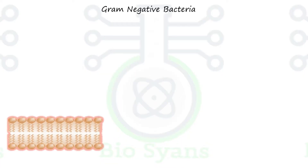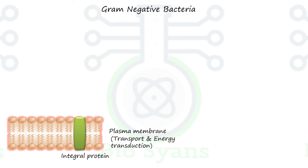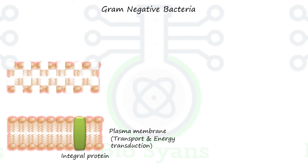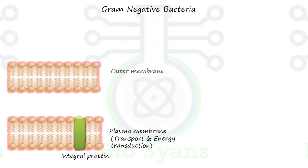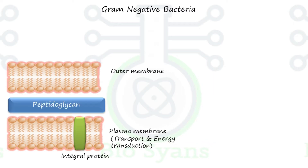Gram-negative bacteria have a plasma membrane that helps in transport and energy transaction. In addition to that, there is an outer membrane present, and in between there is a thin layer of peptidoglycan. Make sure you watch our video on peptidoglycan and band synthesis. The space between the plasma membrane and the outer membrane is called the periplasmic space, and the substance present is called the periplasm.